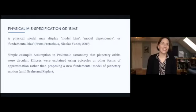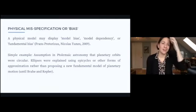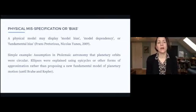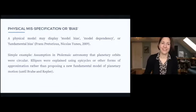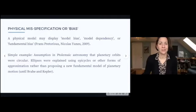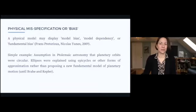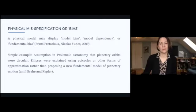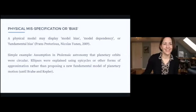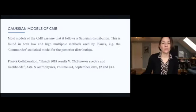There's also what we might call physical misspecification, or substantive misspecification — and Spanos is very careful to distinguish these from statistical ones. A physical model may display what's sometimes called model bias, model dependency, or fundamental bias. Franz Pretorius and Nicholas Yunus have worked on this. A simple example everyone knows: the assumption in Ptolemaic astronomy that planetary orbits were circular, where elliptical data was explained using epicycles or other approximations rather than proposing a new fundamental model of planetary motion.